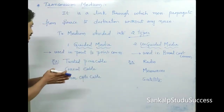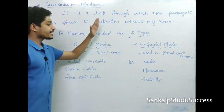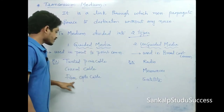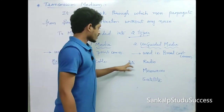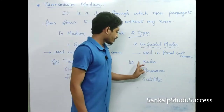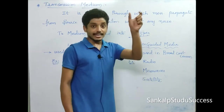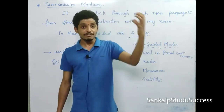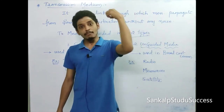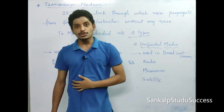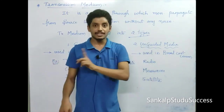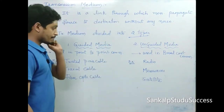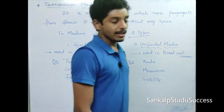So there are two types of transmission media: guided media — twisted pairs, coaxial cables, fiber cables — and unguided media — radio, microwave, and satellites. In satellite communication, a signal is transmitted from one country to another through free space using a satellite as the medium.